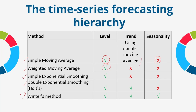Simple exponential smoothing can also only take care of level, not trend or seasonality. Double exponential smoothing, or Holt's method, is more advanced and can take care of level and trend, but not seasonality. In Winter's method, finally, we can take care of seasonality as well, while level and trend are also measured.